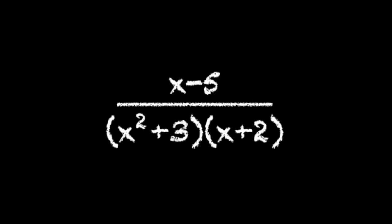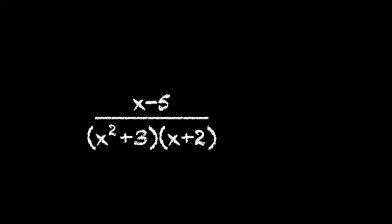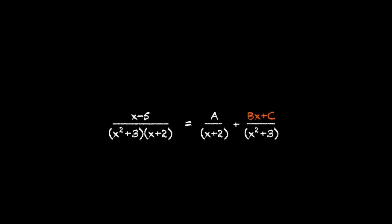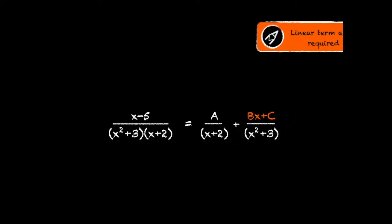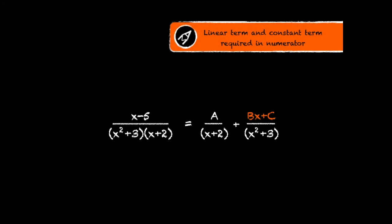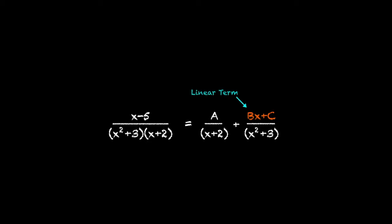So back to our original fraction, just as we did with fractions with linear factors in the denominator, we need a partial fraction for every factor. But the difference is that for the partial fraction with a quadratic in the denominator, we need both a linear term and a constant term in the numerator.